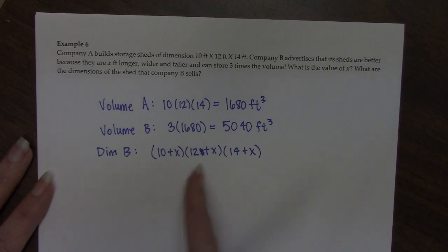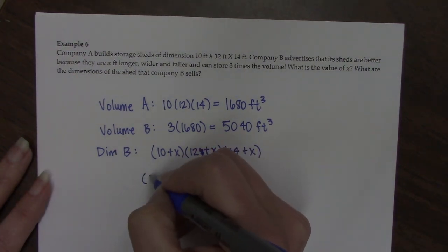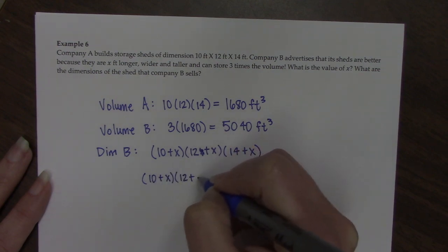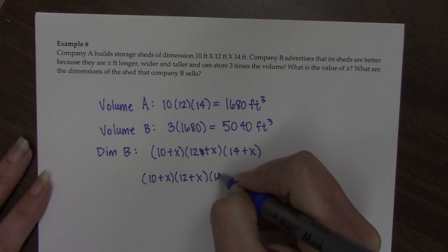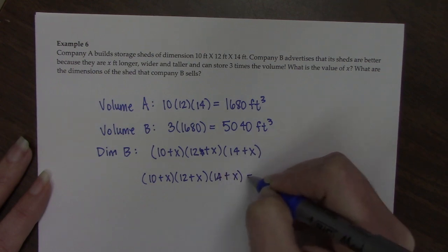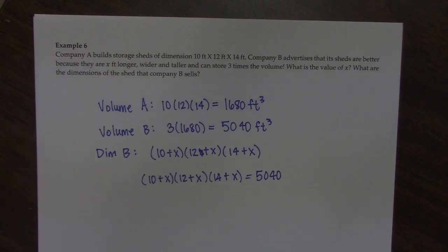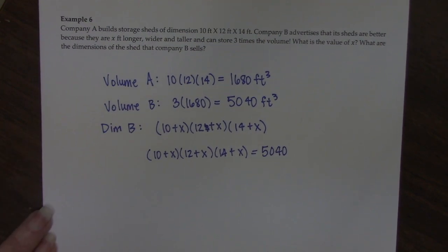So this is a polynomial function. It's actually going to be a cubic. If we set this equal to 5040 feet, we can figure out what the X value is that they added to the sheds.